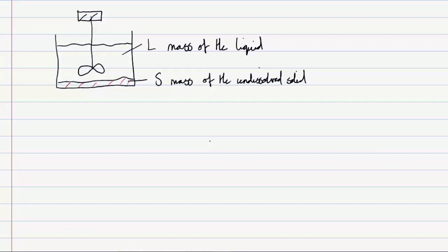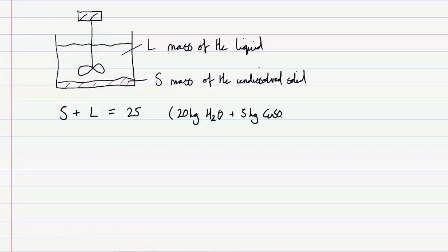Let's start by writing an overall balance. Our first equation states that the mass of the undissolved solid plus the mass of the liquid in our system must equal the total mass, which in this case is 25 kilos — because we had 20 kilos of water to which we added 5 kilos of copper sulfate. That gives us equation number one, our overall balance.